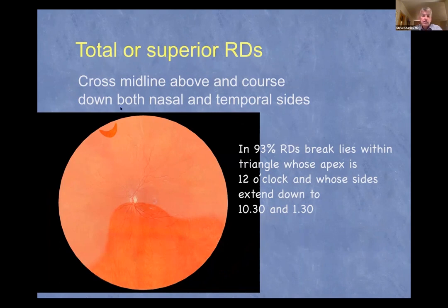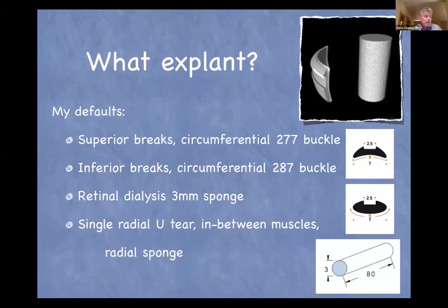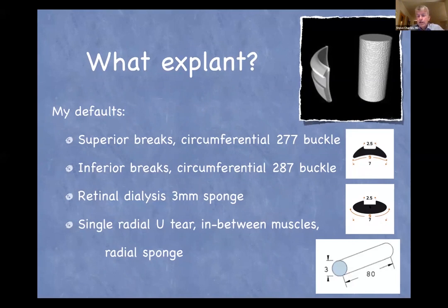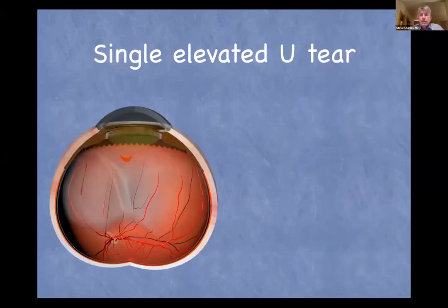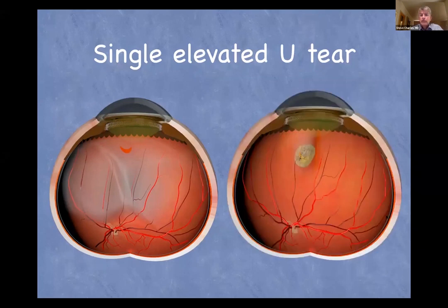When examining somebody, check that the fluid distribution fits the breaks you see. Richard will be talking about buckle types. My default explants for scleral buckling: if the break is superior I tend to use a circumferential 277 buckle with a concave profile. With inferior breaks I use a slightly chunkier 287 with a convex profile. For dialysis I tend to use a 3mm sponge, and if you have a radial tear between muscles I'd consider a radial sponge. For an elevated U-tear, a radial sponge would be a good choice.